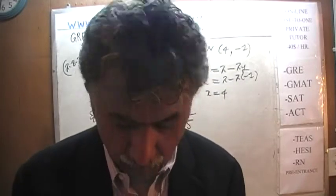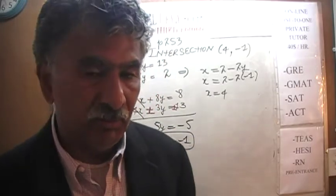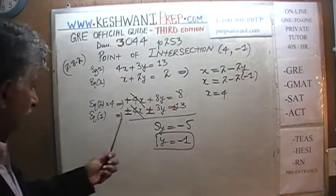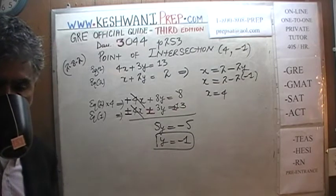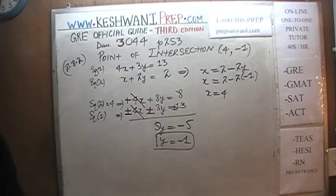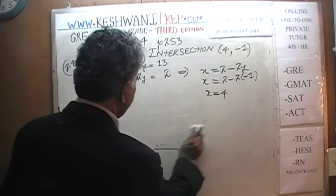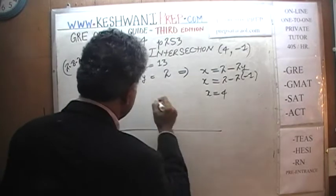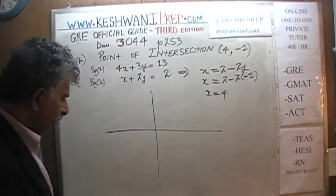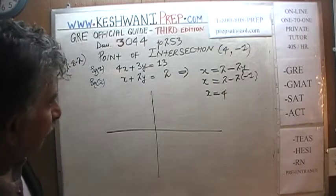We are done finding the point of intersection. Now we are going to take a few moments and actually plot the two lines, as is done in the book. We are going to reproduce the work you see in the book by plotting these two equations. Let's work on equation 1 first.